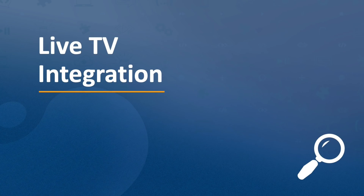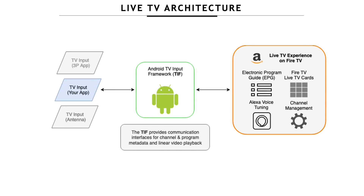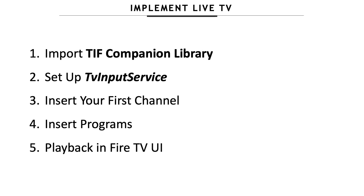The second way to increase discoverability is live TV integration. Through this integration, live TV content can be promoted throughout Fire TV. Live TV channels and their content will appear in Fire TV's Live tab, in the On Now row, and an integrated channel guide will reveal up to 14 days of scheduling information. The live architecture is based on the Android TV input framework, which works between the TV input — which is your app — and the live TV experience embedded on Fire TV. To implement live TV, there are five key steps: import your TIF companion library, set up TV input service, insert your first channel, insert programs, and playback TV in the Fire TV UI.